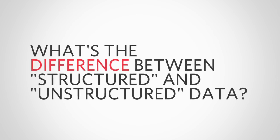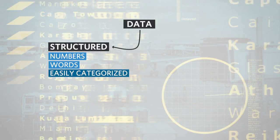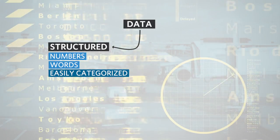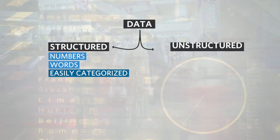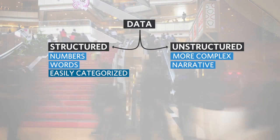What's the difference between structured and unstructured data? Structured data involves numbers and words that can be easily categorized, like the kinds used in that hypothetical lemonade stand. Whereas unstructured data includes information that's typically more complex or narrative in nature.